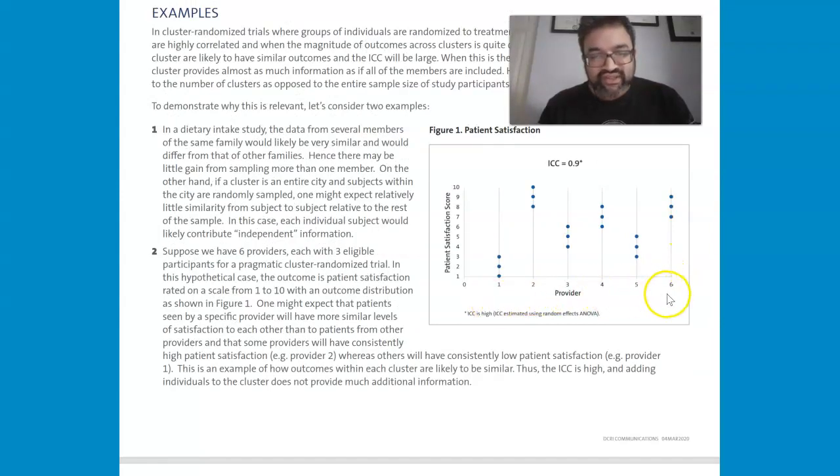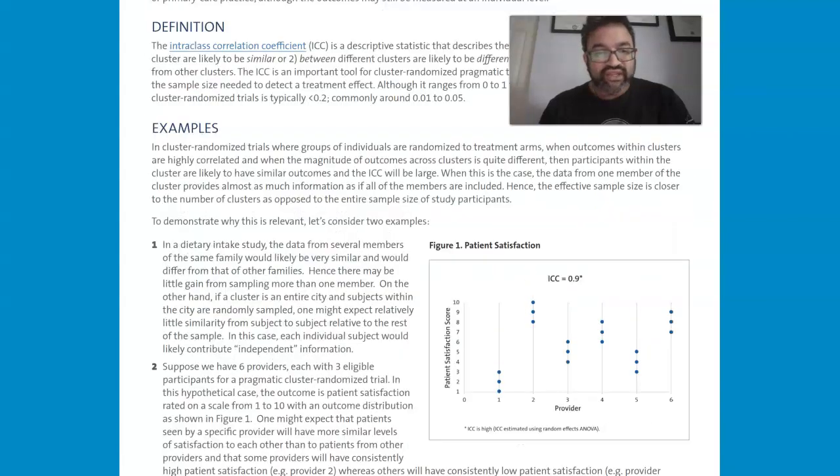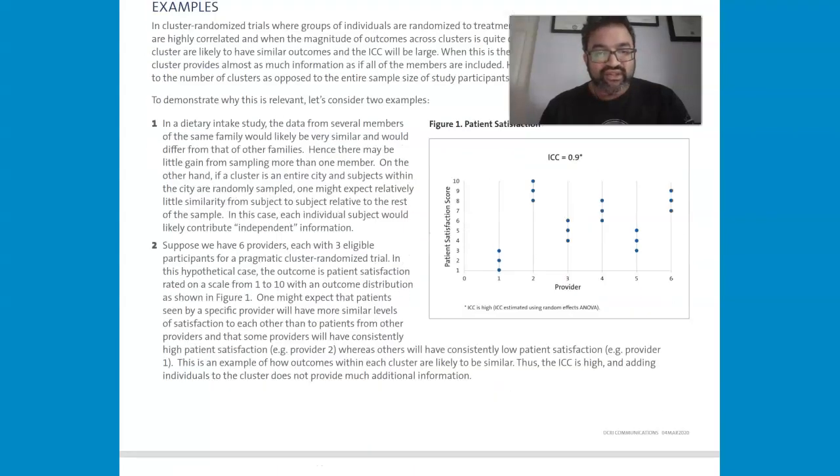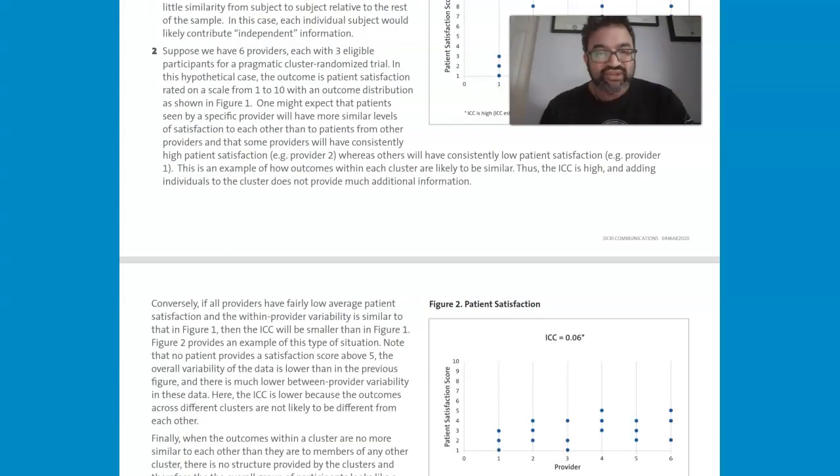So if we look at the first six clusters, the first six set of answers, you see that there's a lot of variability, and that means that if you do add another additional provider, or additional six providers even if you ask me, then that would add a lot of information because there is a lot of variability. So inter-class correlation coefficient, there's a lot of variability there, so you can have.